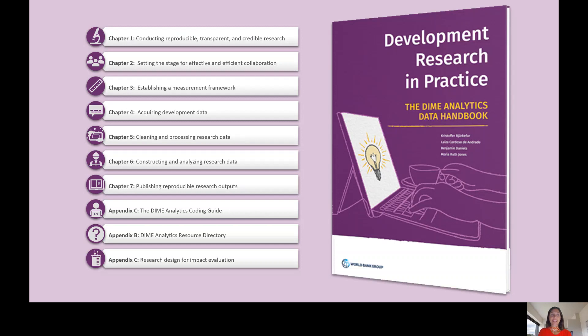Chapter 6 dives into that analysis, introducing core principles for writing analytical code, and creating, exporting, and storing research outputs reproducibly. Chapter 7 turns to the publication of research outputs, and provides guidelines for preparing functional and informative reproducibility packages.